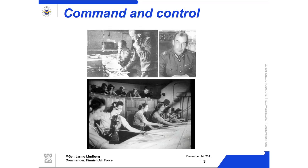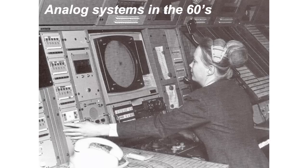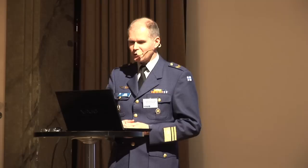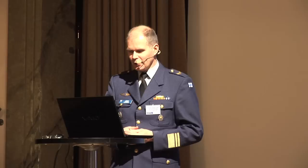Command and control was all analog — visual information, phone lines. We developed an analog radar network, the first network in the 1960s, and also the command centers which are inside granite hills in Finland. This is how it looked in the 1960s.